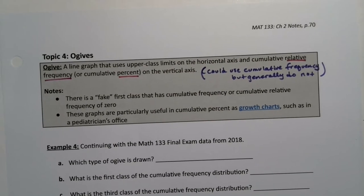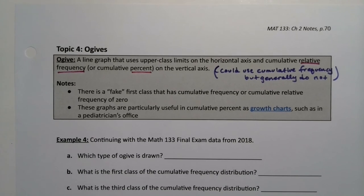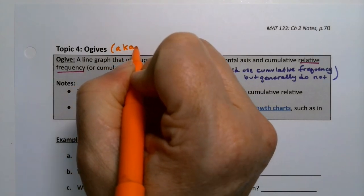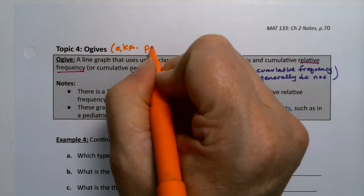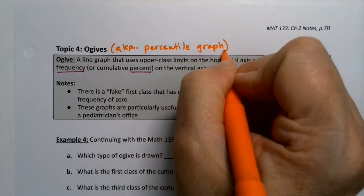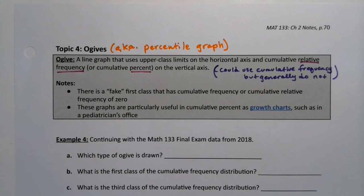By the way, another terminology for ogive is percentile graph. So when you see those growth charts, they're percentile graphs, right?